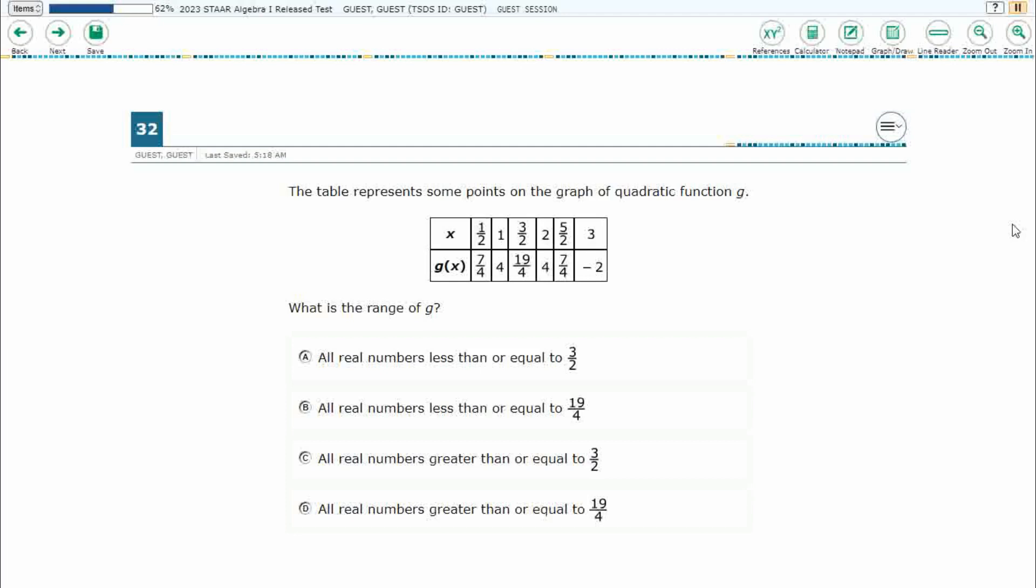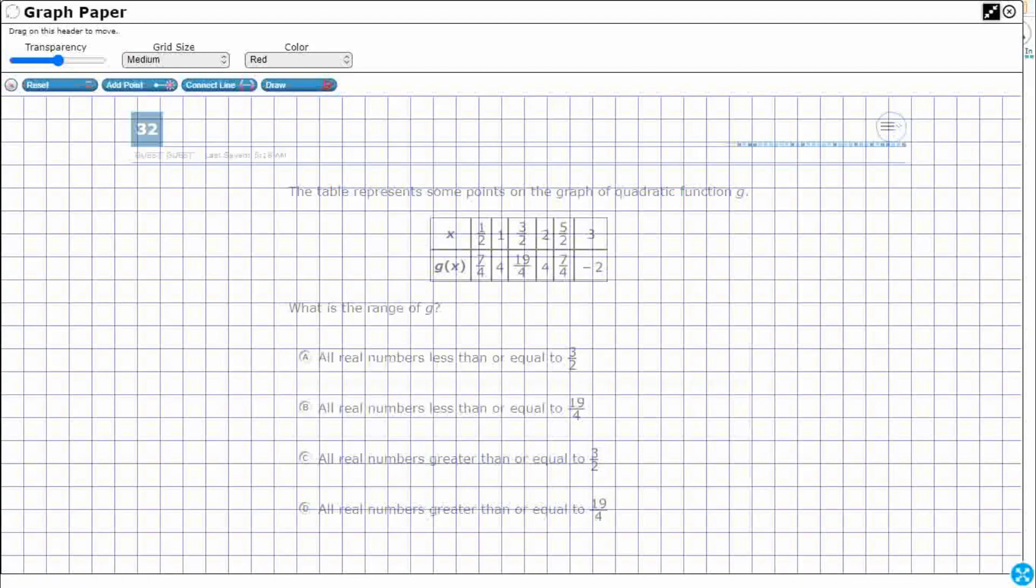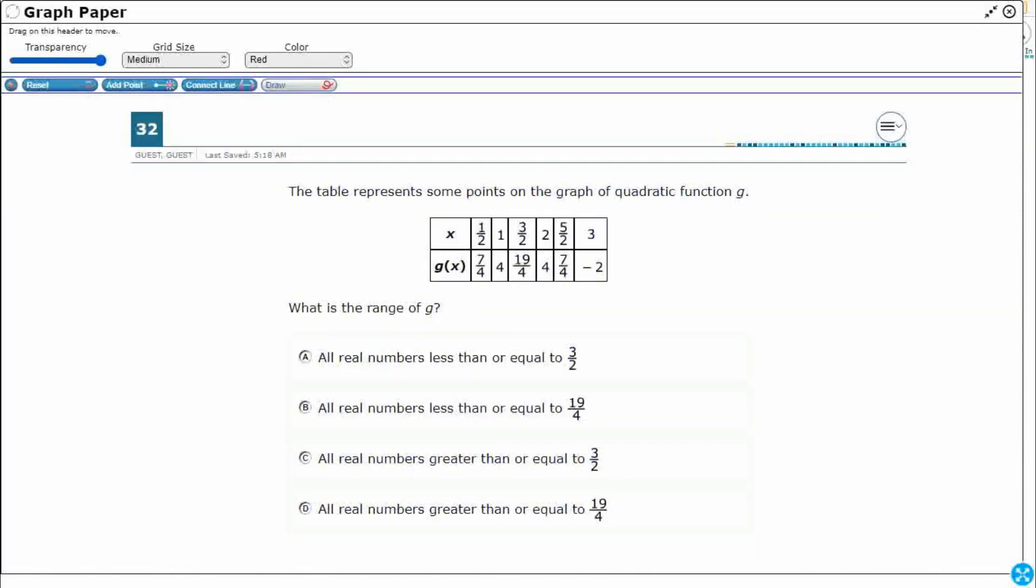So we've got a quadratic function and that tells us we're going to have some type of parabola here. Quadratic means we're going to have a parabola either facing up or facing down, and we're looking for the range. So the range is going to be your dependent variable values. Typically we think of them as our y values, in this case we're thinking of it as our g of x.